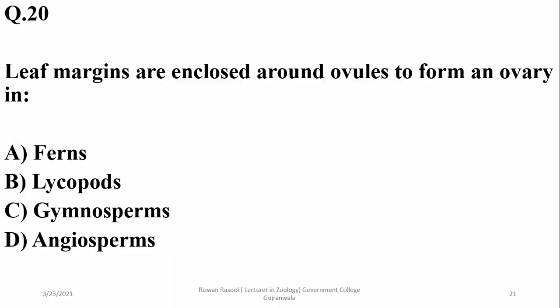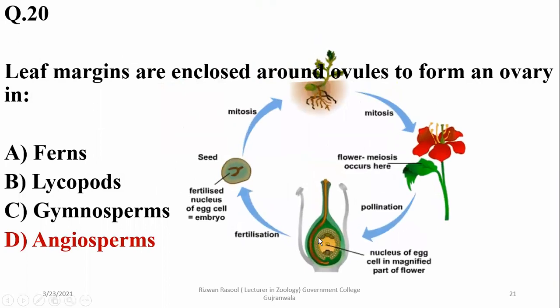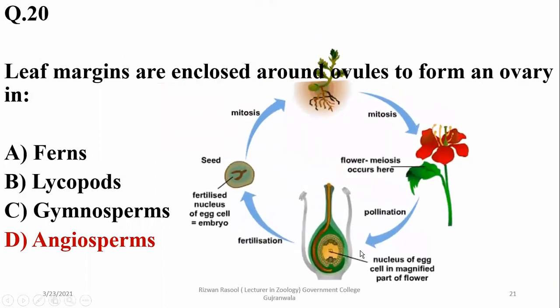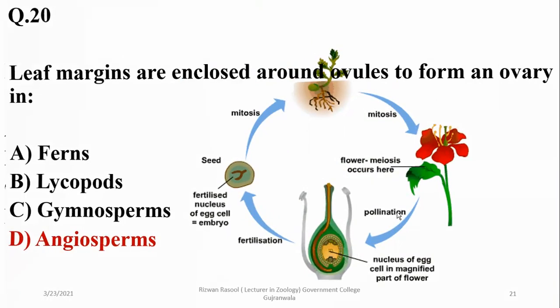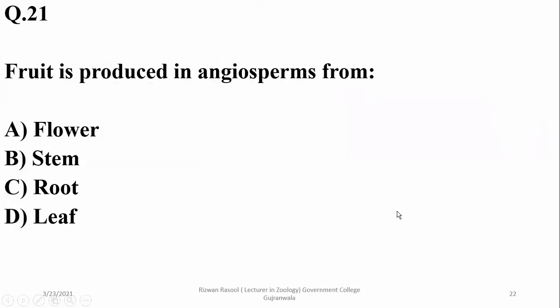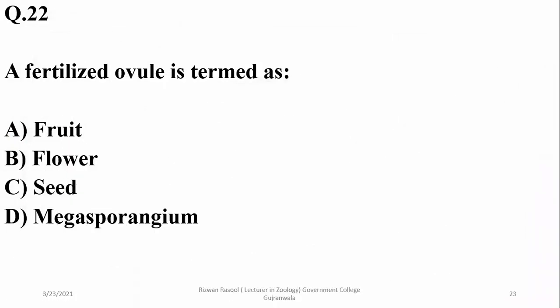The leaf margins enclose to form an ovary as well as a fruit in angiosperms only. Fruit is not formed in gymnosperms, which is why they produce naked seeds. Fruit is produced in angiosperms from the flower, especially from the fertilized ovary, and a fertilized ovule is termed a seed.